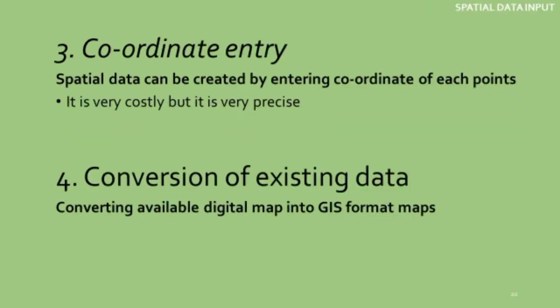The third method is coordinate entry. Without any images, spatial data can be created by entering the coordinates of each point. If you want to enter a square or polygonal area into your GIS map, you simply insert the x, y and z coordinates into the software and that area will be drawn in the GIS map. It is very costly but very precise.